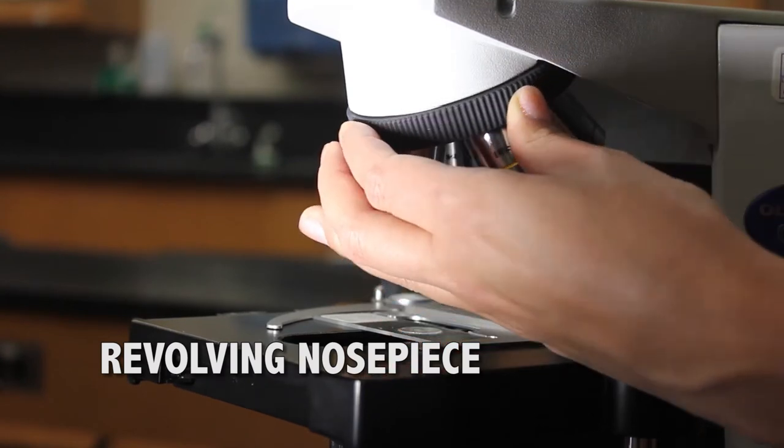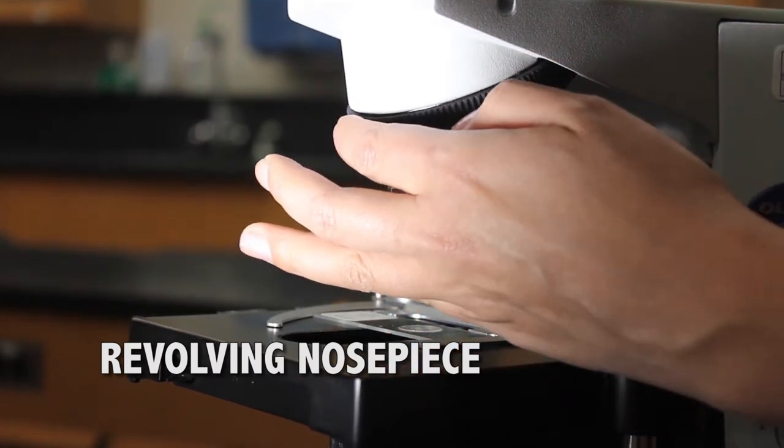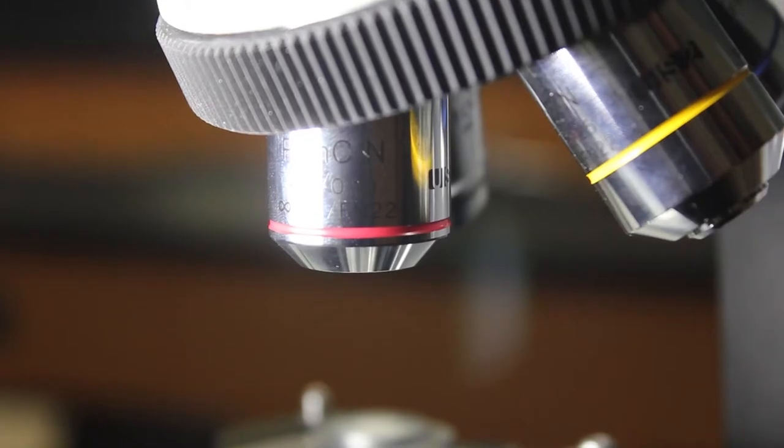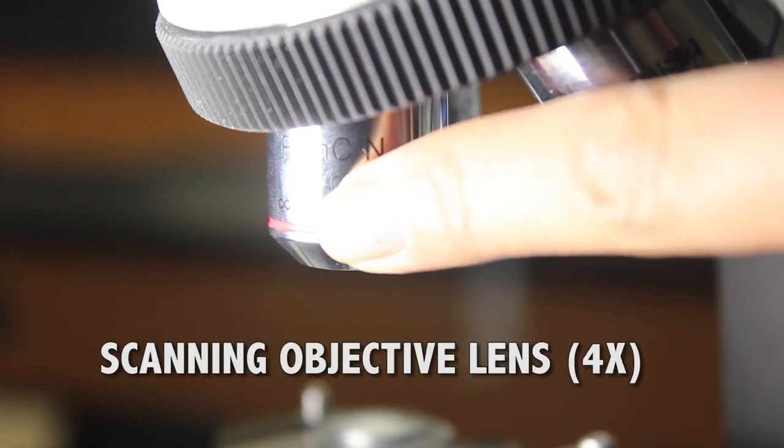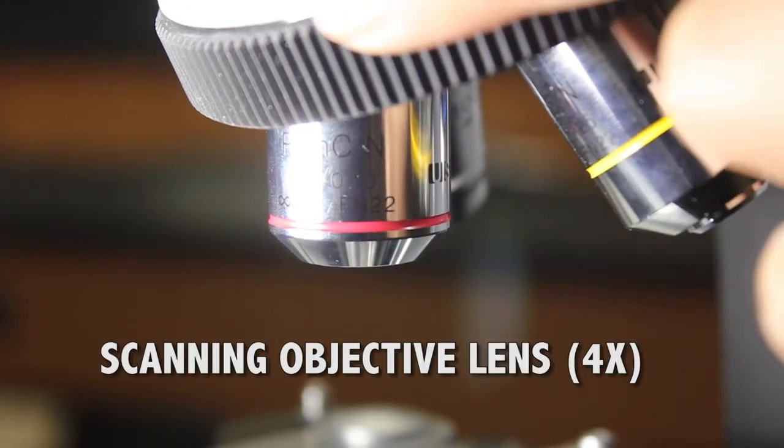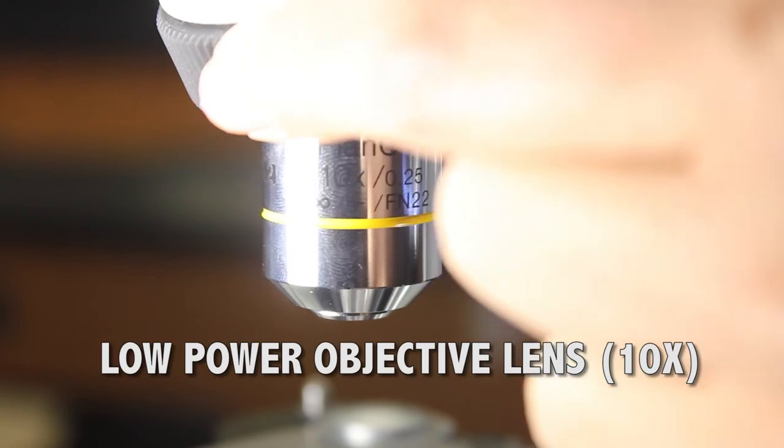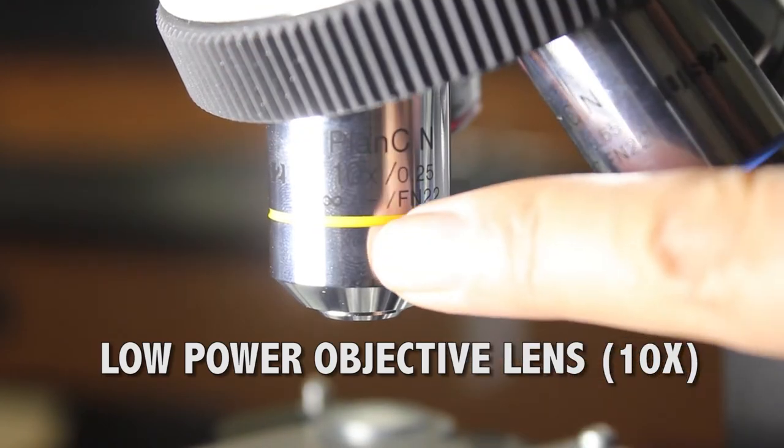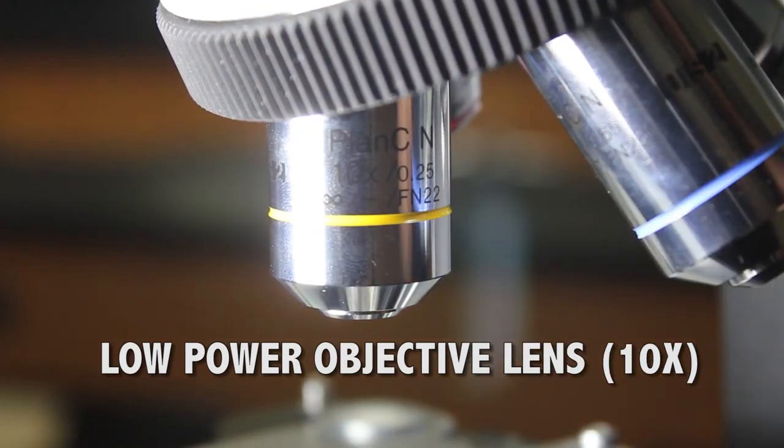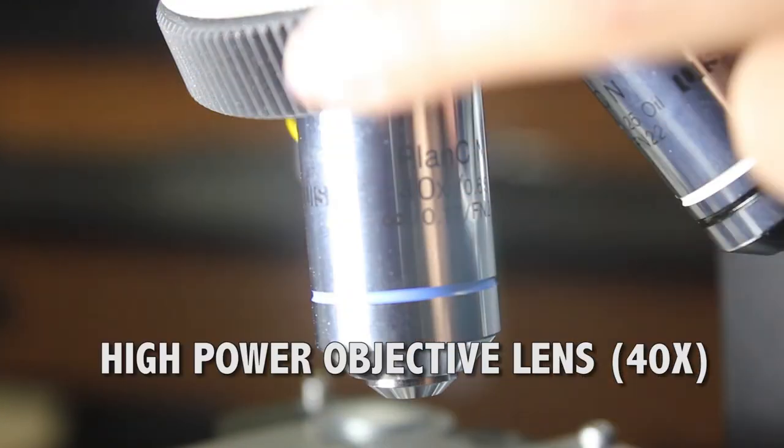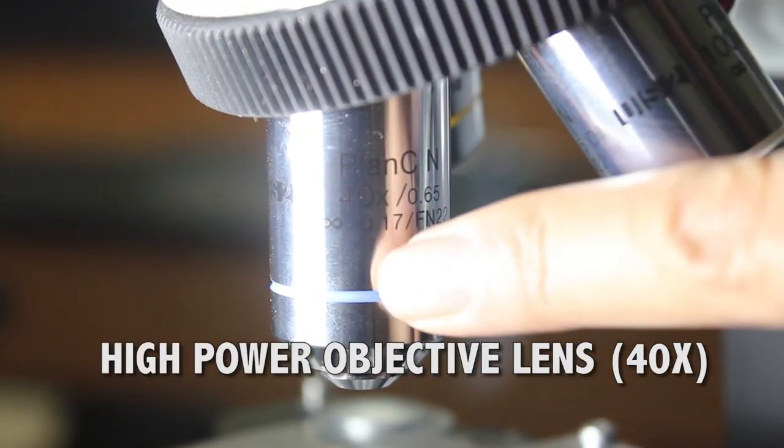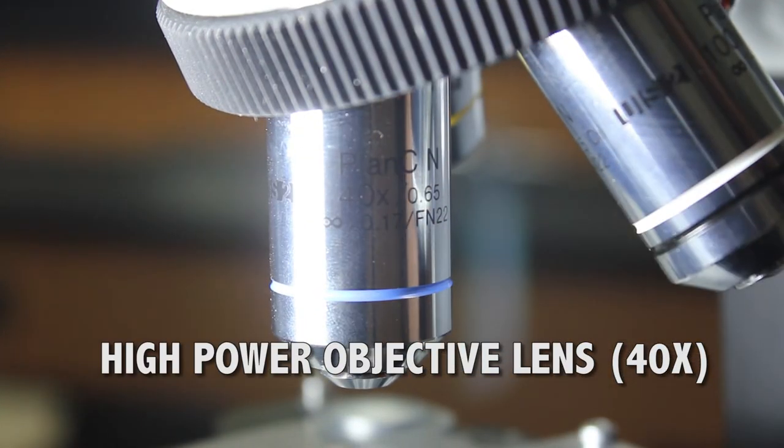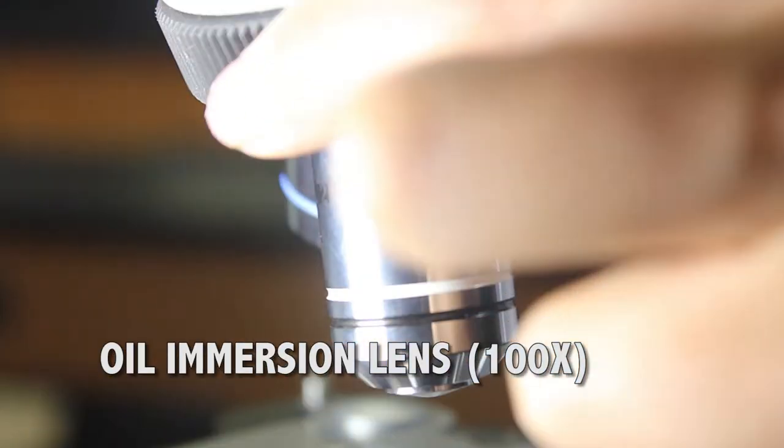The revolving nose piece holds the objective lenses. Objective lenses are marked with magnification and are color coded. Scanning objective lens is 4x. Low power objective lens is the 10x. High power objective lens 40x. And the oil immersion lens, 100x.